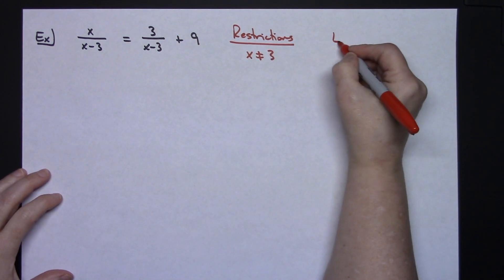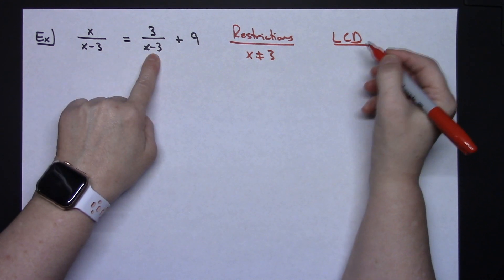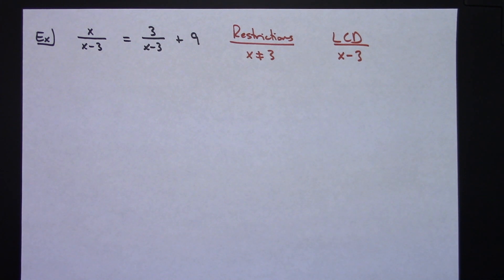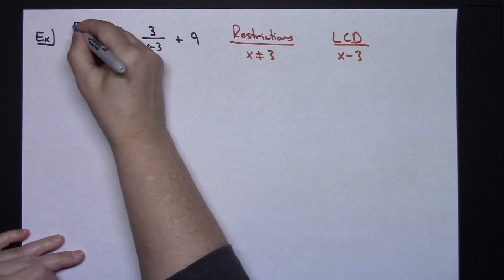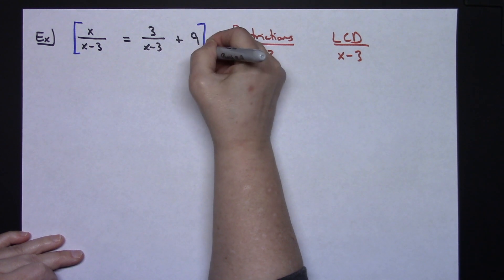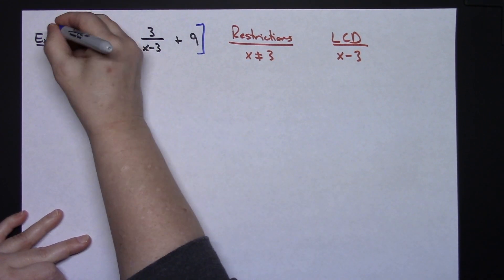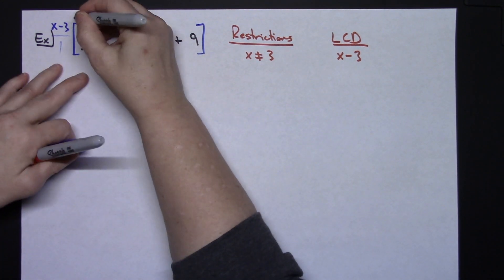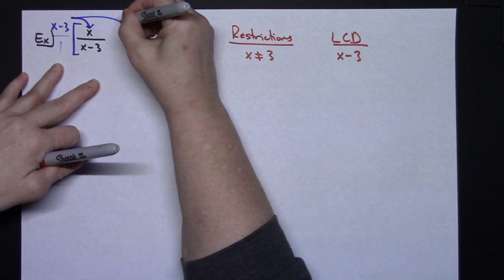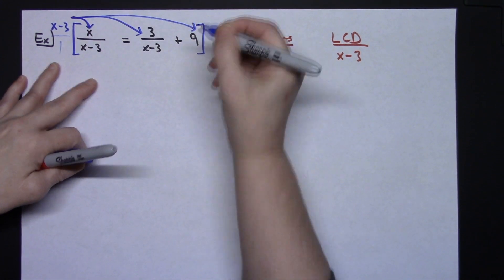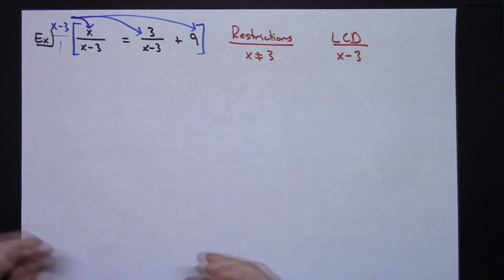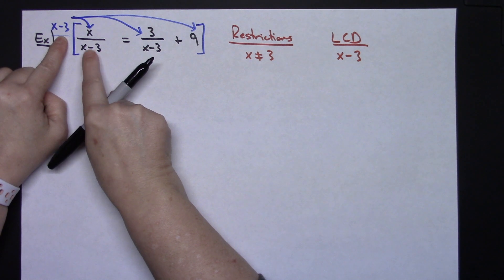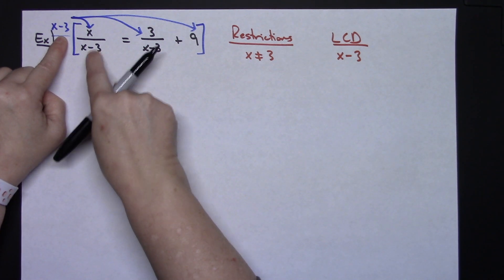I'll find the least common denominator, which is just x minus 3, and multiply through to get rid of my fractions. I write x minus 3 once at the top — it's over 1 — and distribute it to all three terms. When I do that it eliminates my fractions: x minus 3 divided by x minus 3 gives 1 times x, which is just x.